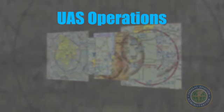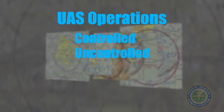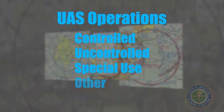For UAS operations, the four main types of airspace are controlled, uncontrolled, special use, and other.